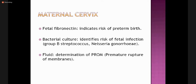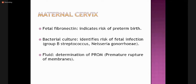The maternal cervix can also be targeted for sampling and analysis. Fluid is collected and fetal fibronectin can be analyzed in the laboratory — it indicates risk of preterm birth. Bacterial culture is also performed to identify the risk of fetal infections, especially Streptococcus and gonorrhea. The fluid can also indicate premature rupture of membranes.